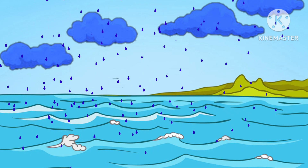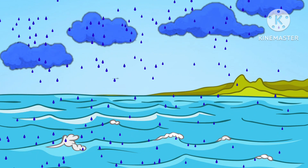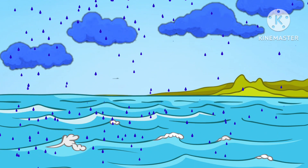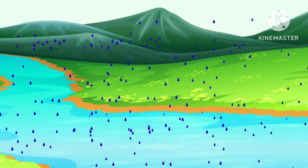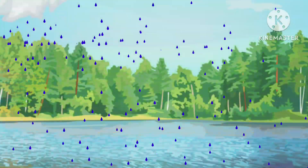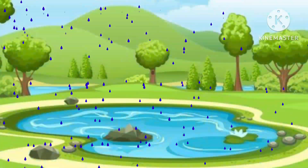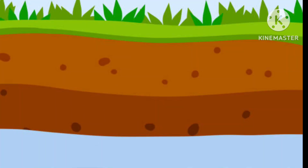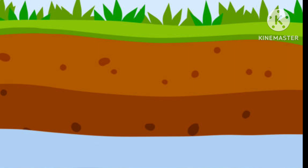This rain water then gets collected in ocean, sea, river, lake, and ponds. Land also soaks most of it and it gets collected as underground water. This is called collection, and then the cycle continues.